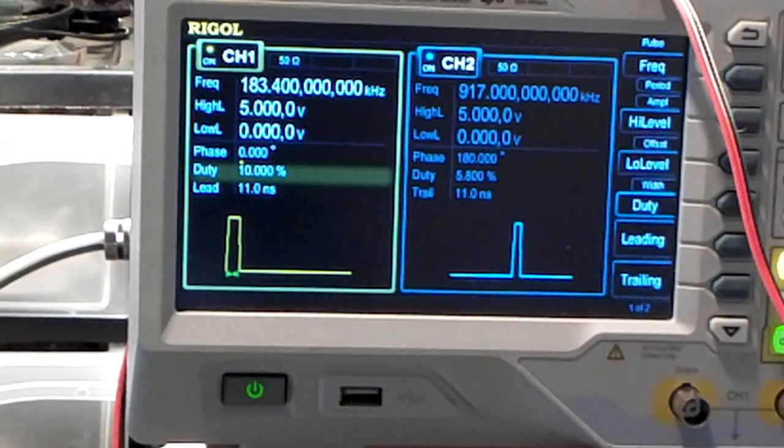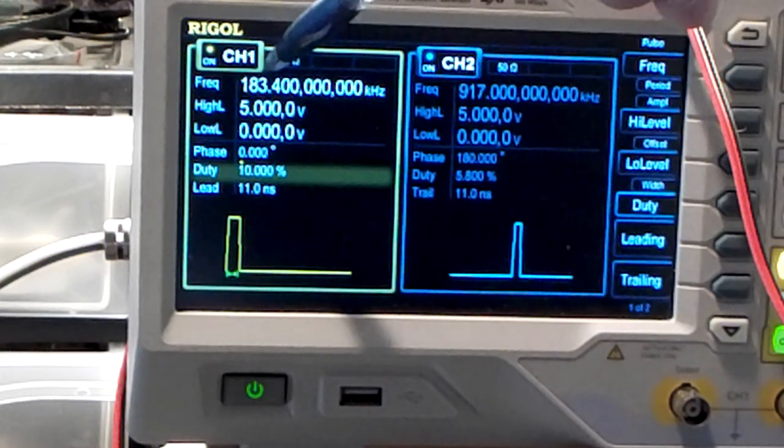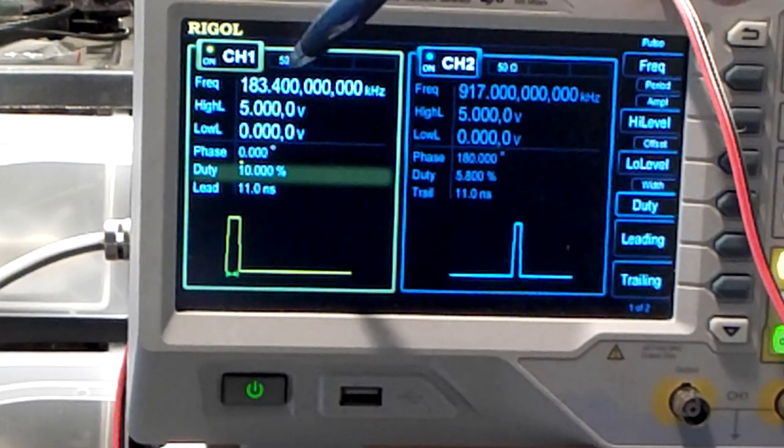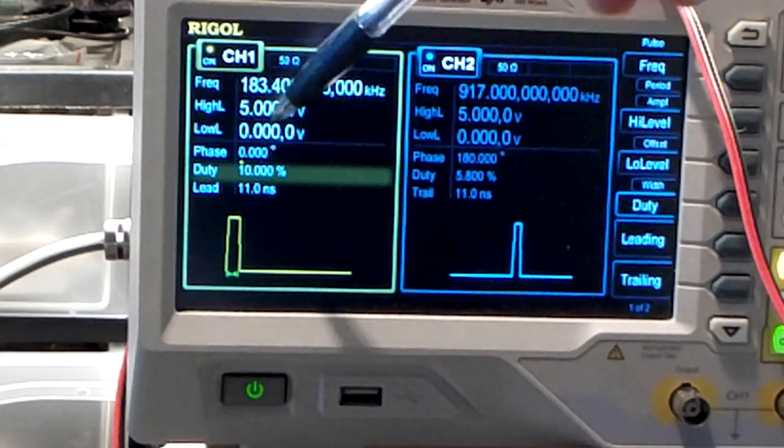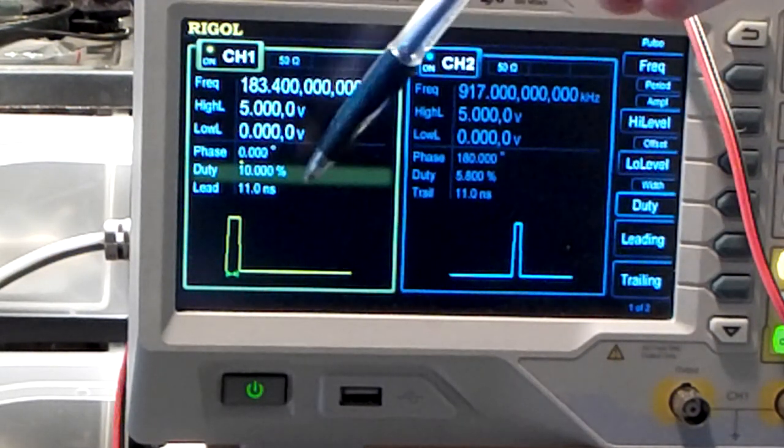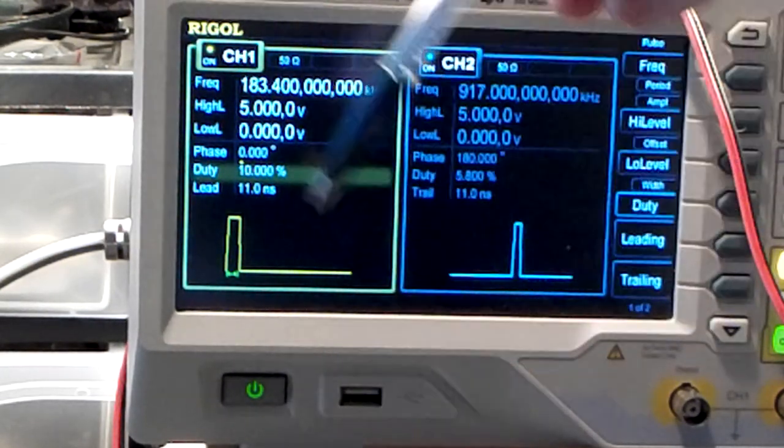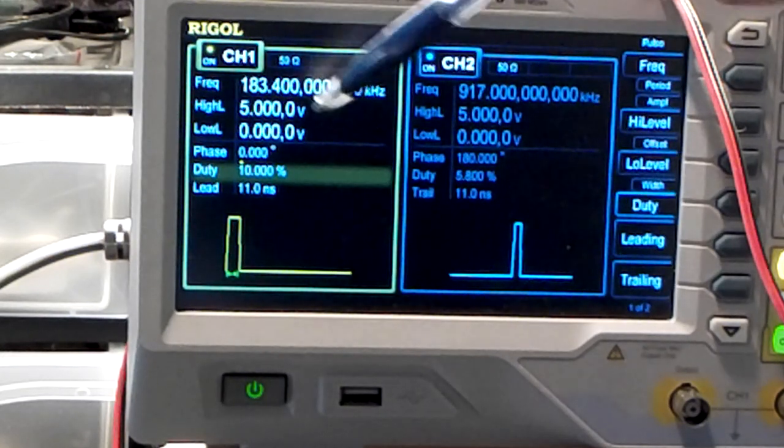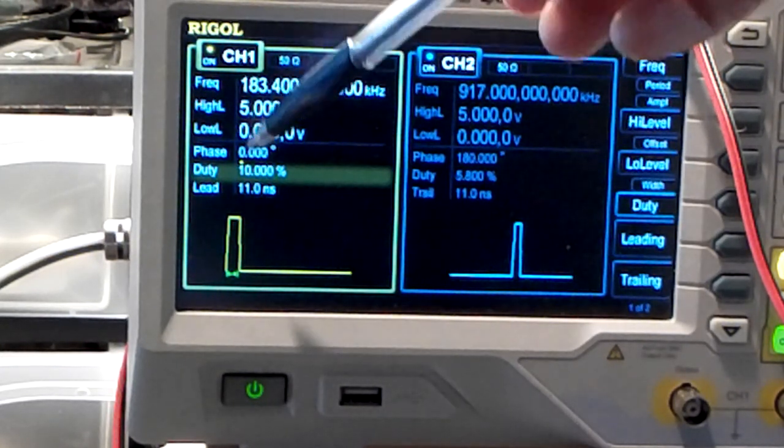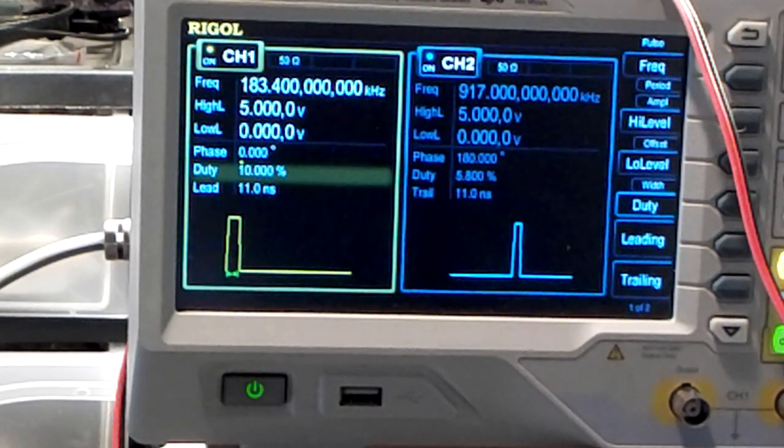As you can see we have on channel 1 previously 183.4 kHz with a duty cycle of 10%. To determine the duty cycle you have to divide 50 by the free oscillations that you want. In this case we have 5 free oscillations. So we need to divide 50% duty cycle by 5 to get 10% duty cycle to have the correct value.